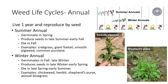Weeds are also classified based on their life cycles, which is the period between seed germination and plant death. Annual weeds complete their life cycles in one growing season. Annuals are generally divided further into summer annual and winter annual weeds. Summer annuals germinate in the spring, mature, produce seed, and die in one growing season.